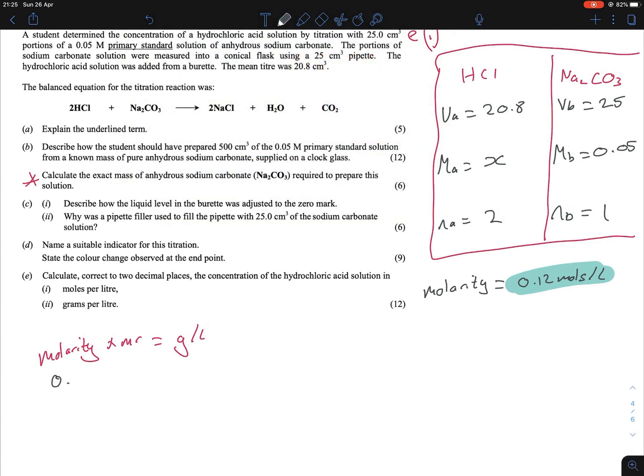So it becomes 0.12. Now, even though it's a simple formula, lots of students got this one wrong. Because what did they do? They used the MR of the Na₂CO₃ because they were so used to using that. So they plugged in 106 straight away and got the answer wrong. Because you were asked to calculate the concentration of hydrochloric acid solution in grams per liter. So therefore, you're multiplying this by the MR of hydrochloric acid, and the MR being 36.5. And when you multiply the two of them together, you're going to get 4.38 grams per liter.